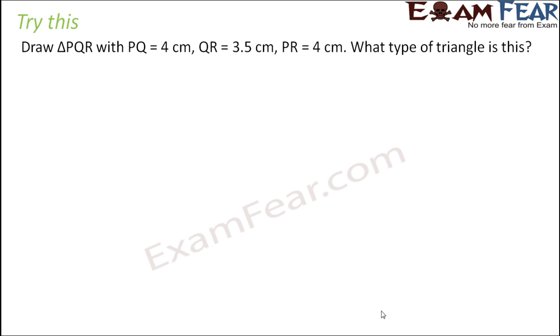When you look at this triangle again, let us have a rough sketch in mind. Let us say this is your triangle PQR. As per the question, PQ is equal to 4 cm, QR is equal to 3.5 cm and PR is again equal to 4 cm.